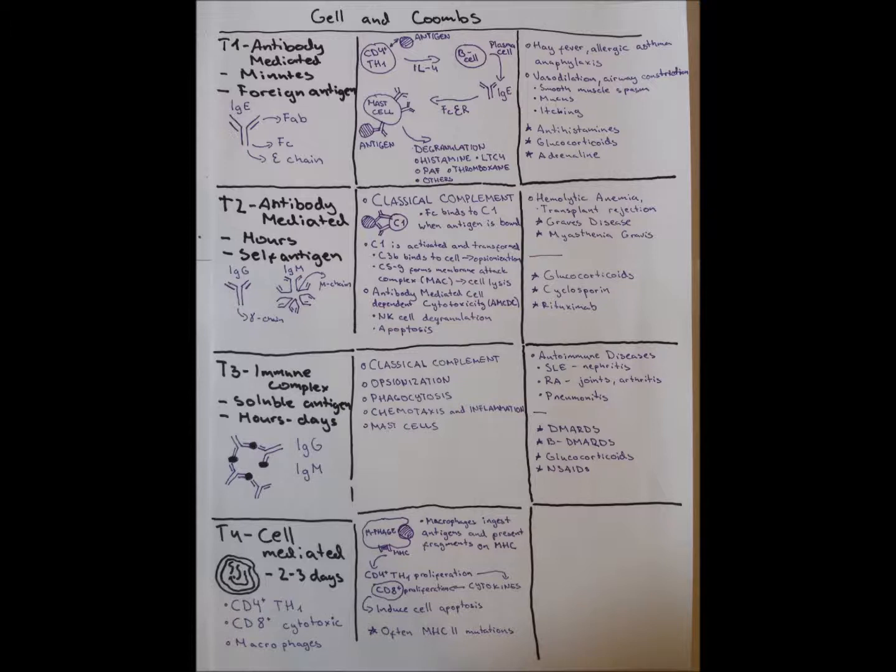Type 3 immune complex reaction is usually chronic, as they deposit insoluble antibody complexes on tissues causing constant inflammation. Important examples are systemic lupus erythematosus, where the most important cause of death is probably nephritis, but it affects many organs. Rheumatoid arthritis affects joints mostly with various symptoms. Some cases of pneumonitis are type 3 hypersensitivity. We use DMARDs and biologic DMARDs, which are disease-modifying anti-rheumatic drugs that target various mechanisms of inflammation or cell proliferation. Very useful, usually used in combination.